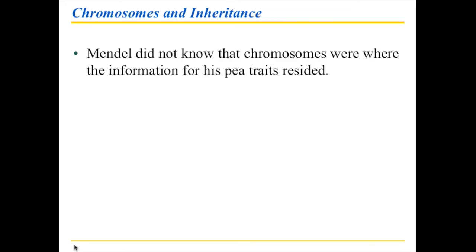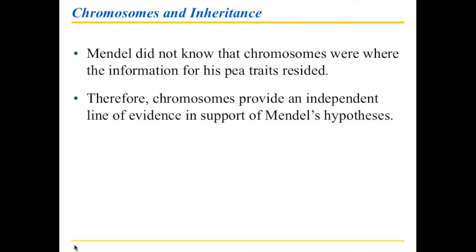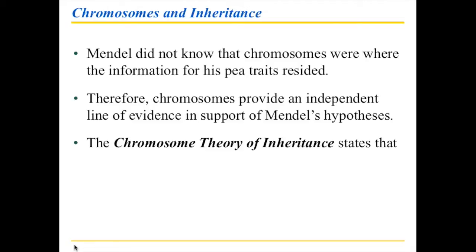This is always a challenge. It's always good when you're working in science that you have a complete background, but sometimes you have to step out and create some hypotheses even though you don't know exactly what's going on. Chromosome evidence, it turns out, provided an independent line of evidence to support Mendel's hypotheses. He didn't know about them, and so when somebody later tried to put together chromosomes and Mendelian genetics, they became a proof for how Mendelian genetics operated.